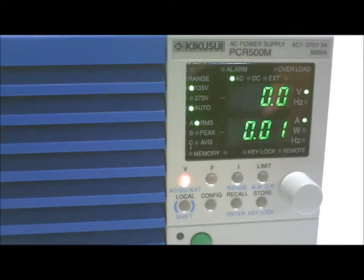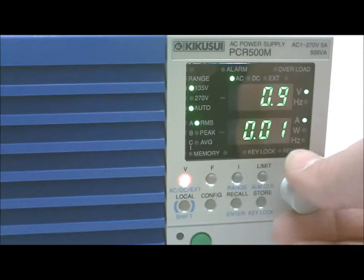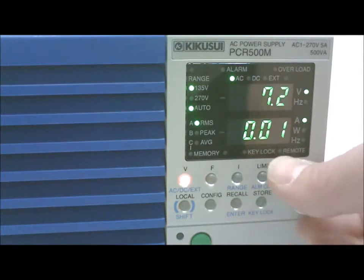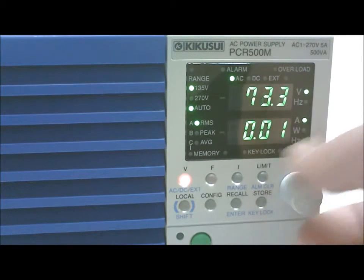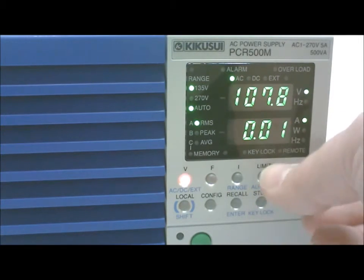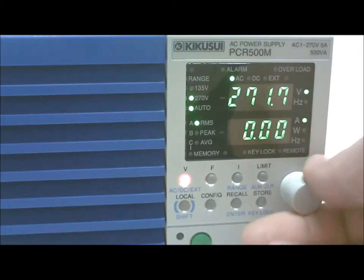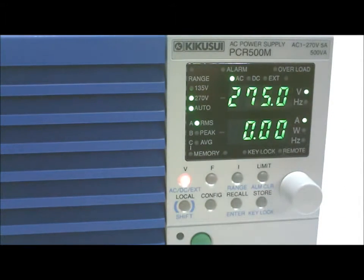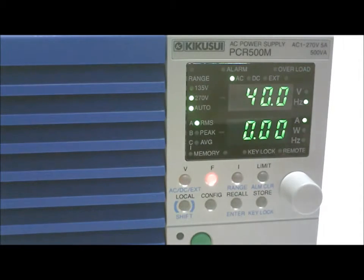The AC output voltage has very low harmonic distortion and is highly stable. It can be set between 1V and 270V. The frequency can be set between 40 and 500Hz.